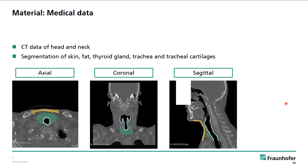We have 3D CT data of the head and neck, segmented using 3D Slicer. Here you can see in brown the skin, in yellow the fat, in green the thyroid gland, in blue the trachea, and in lighter green the tracheal cartilages.